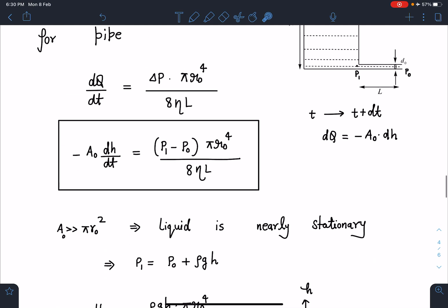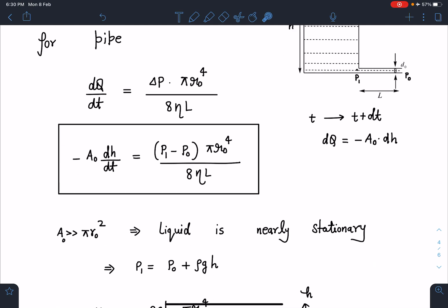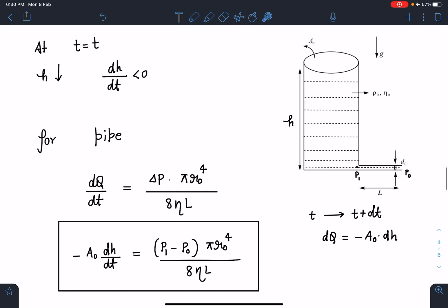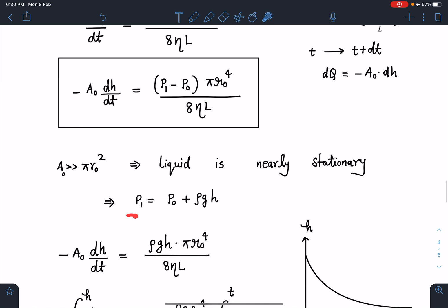If I substitute this value here: -A₀ dh/dt, and this P₁ - P₀ will come instead of ΔP: π r₀⁴/(8ηL). Now here I can use that approximation: if A₀ is very very large compared to π r₀², then liquid is nearly stationary. If liquid is nearly stationary, I can write pressure here is P₀ + ρgh = P₁. So P₁ - P₀ = ρgh.